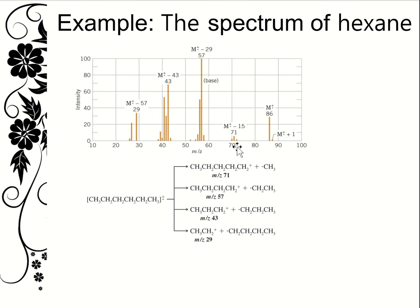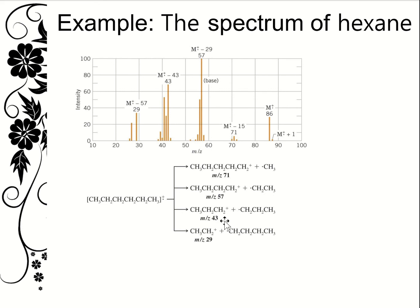Clearly there are other daughter ions or fragment ions. If we remove a methyl group we're left with one fragment ion; if we break the molecule in two at different positions we get other daughter ions. All of these are represented on the spectrum — peaks at 71, 57 (the most intense), 43, and 29. Those are the major daughter ions or fragments.